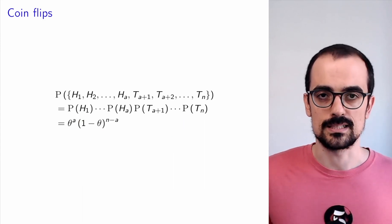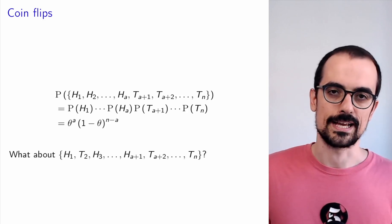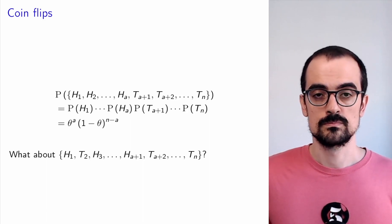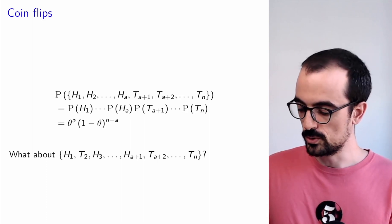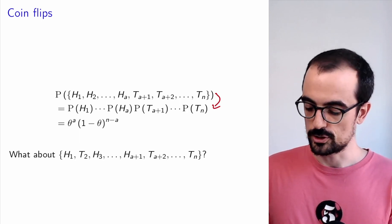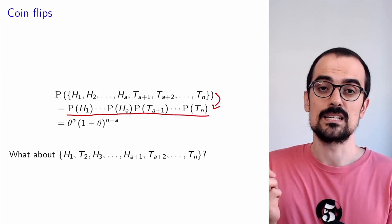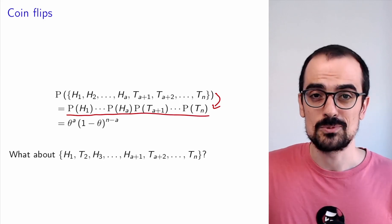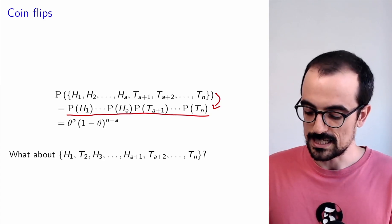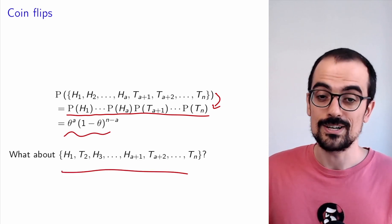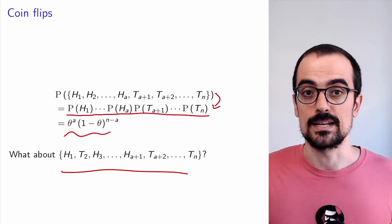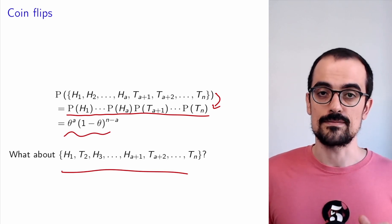Now imagine a slightly different ordering — for example, heads, tails, then the rest. Is the probability going to be the same? The answer is yes, because you obtain the same individual probabilities, just in a different order. Since multiplication is commutative, you get the same result. So any ordering with exactly a heads and n minus a tails has the same probability. Now we just need to figure out how many such orderings there are.